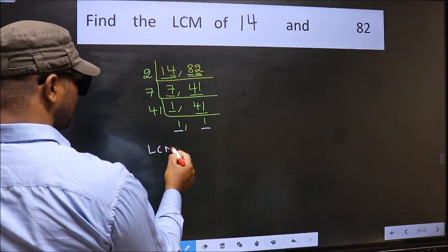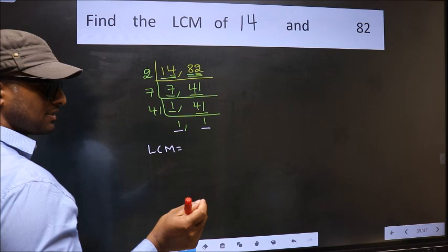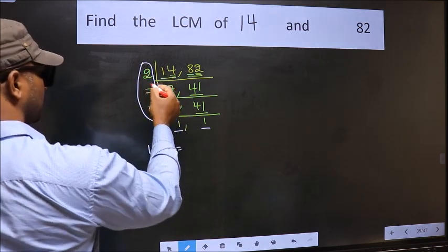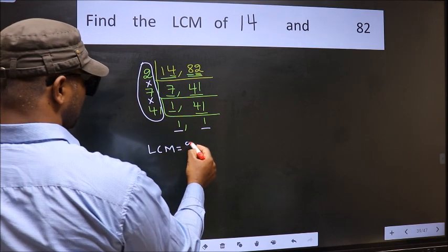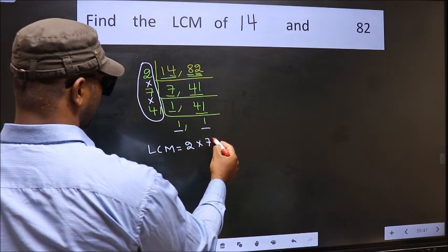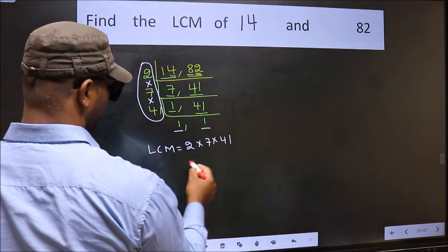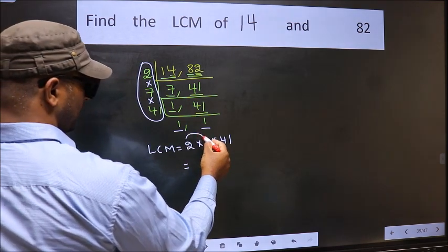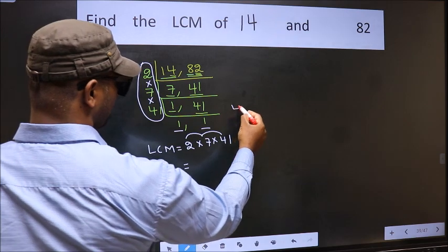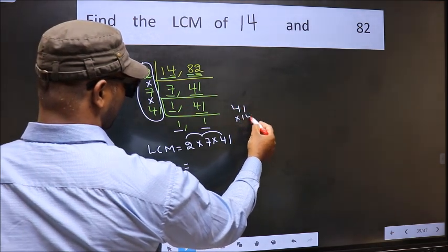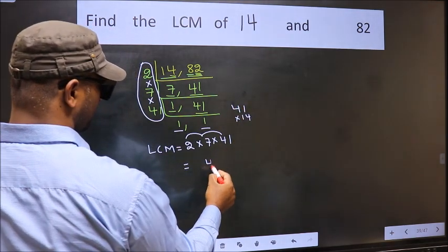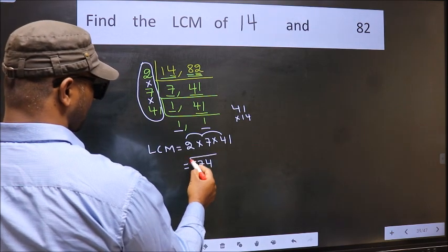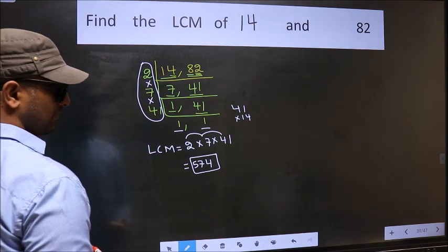So our LCM is the product of these numbers, that is 2 into 7 into 7 into 41. So let us multiply these numbers, 2 into 7, 14 into 41. 14 1s 14, 4 1, 14 4s 56 plus 1, 57. So 574 is our LCM.